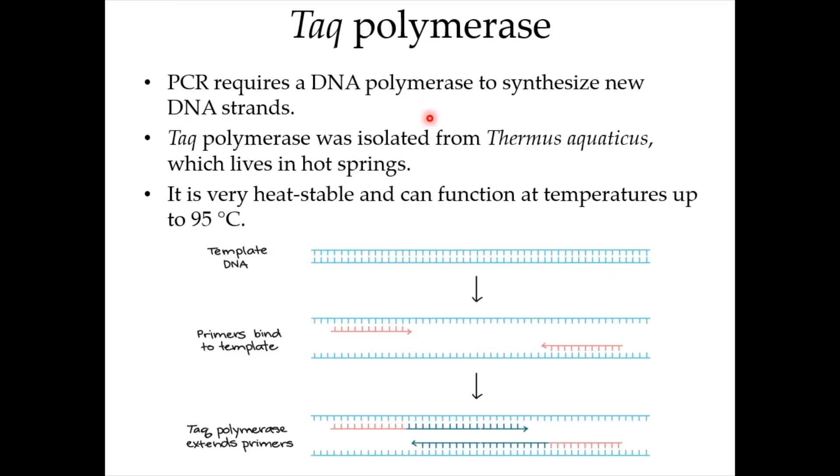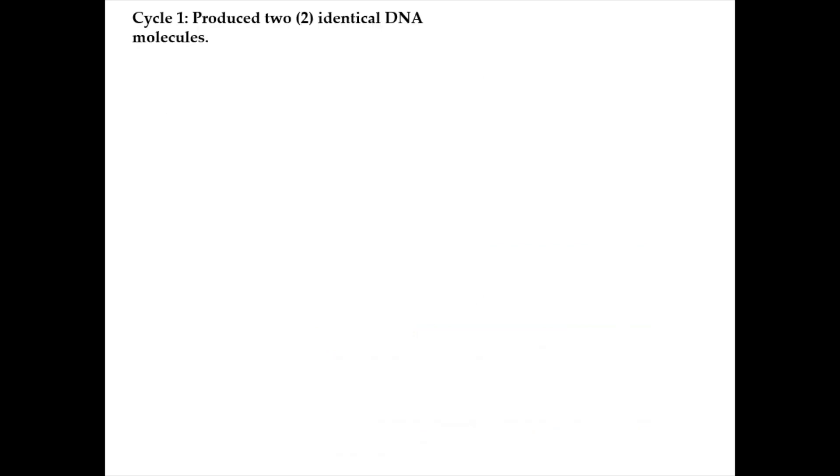PCR requires a DNA polymerase to synthesize new DNA strands. Because PCR uses temperatures up to 98 degrees Celsius, we need a DNA polymerase that can withstand high temperature. Taq polymerase was isolated from the bacteria Thermus aquaticus, which lives in hot springs. It is very heat stable and can function at temperatures up to 95 degrees Celsius. As shown in the diagram, you can see that the Taq polymerase would extend the primers by adding free nucleotides.